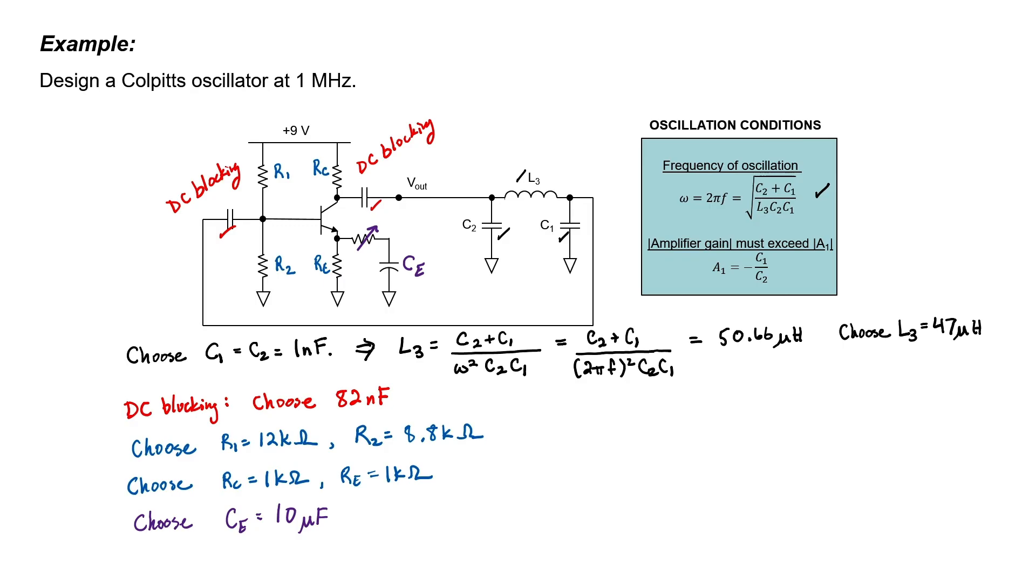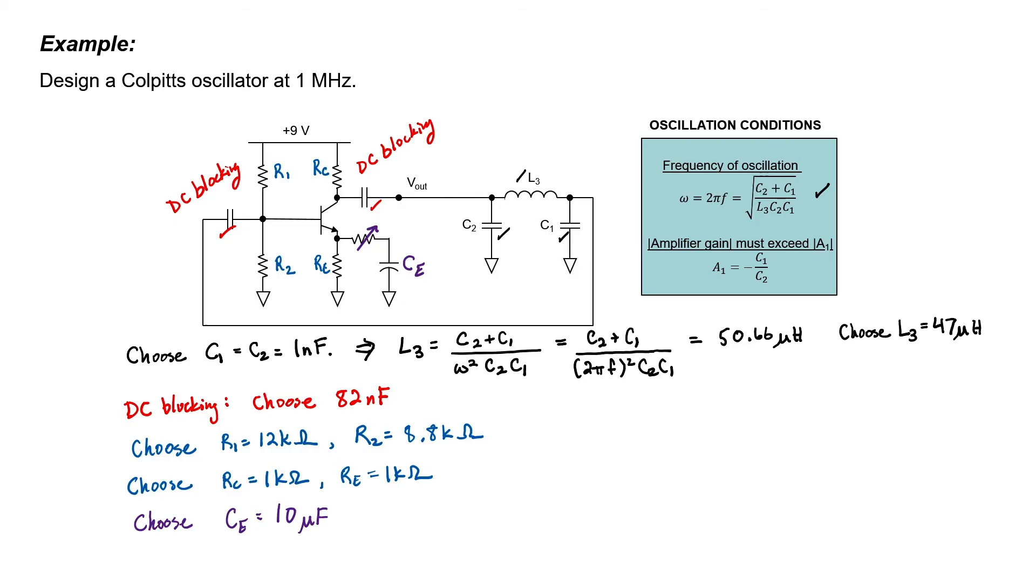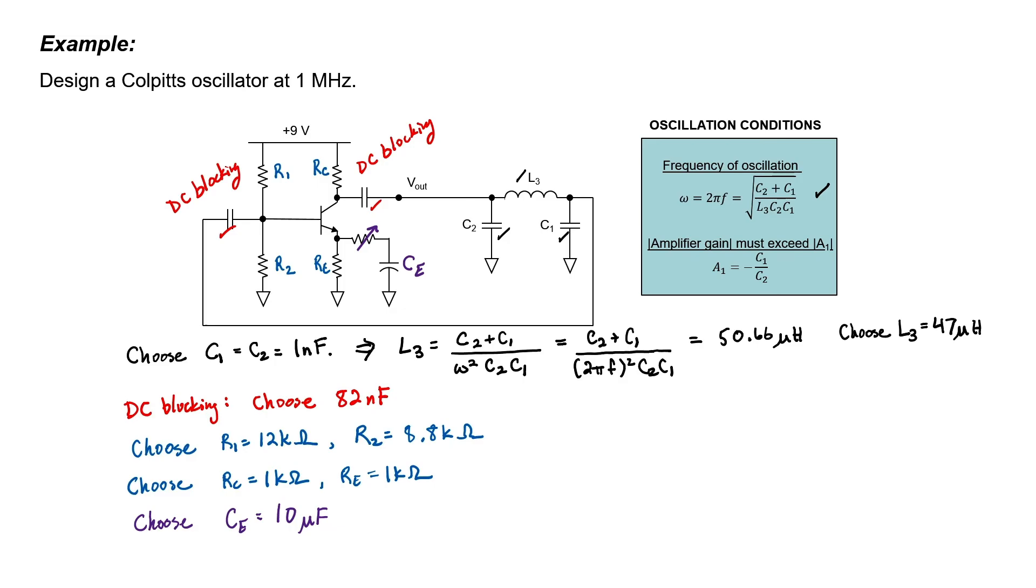But transistors don't saturate suddenly, they saturate gradually. So let's rely on the inherent nonlinear behavior of the transistor itself in order to make sure that our sine wave doesn't deviate too much from its ideal form. Since we can control the AC gain of this amplifier by adjusting this particular resistor, we can ensure that the saturation point isn't too sudden.